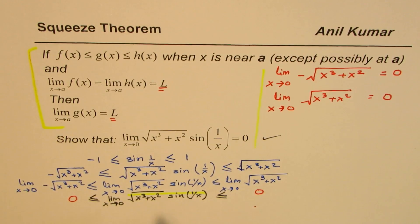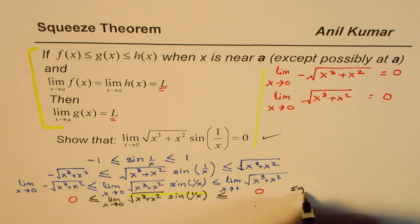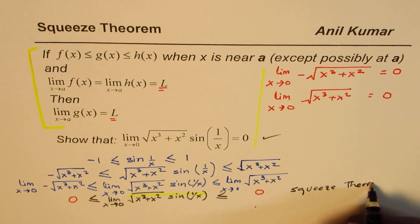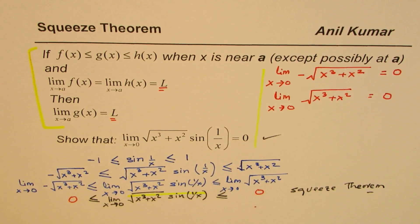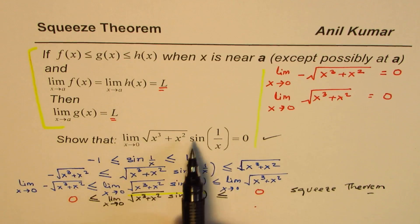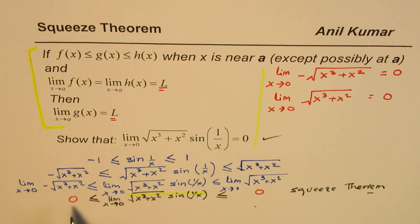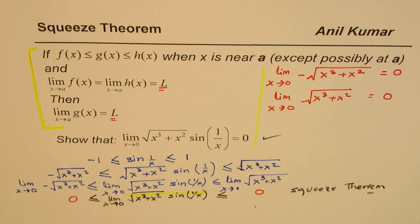Using the squeeze theorem, we could prove this. So it has been proved using the squeeze theorem that the limit of this function as x approaches 0 is 0, since it has been squeezed between two zeros on both sides. That is how you can apply the squeeze theorem to find the limit of some trigonometric functions.